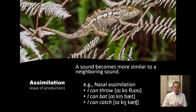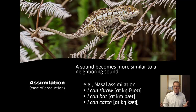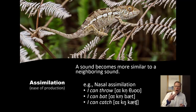Assimilation is where a sound becomes more similar to a neighboring sound. By doing this, you can intuitively see that that's going to make it easier on the speaker — they are going to have to do fewer gestures, basically. So, for example, if you are assimilating the place of articulation, then you don't have to move your tongue or lips any more than is necessary.